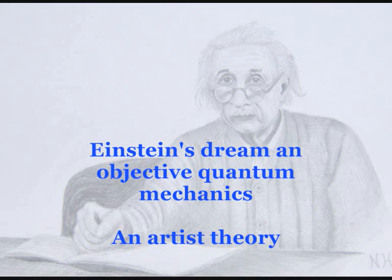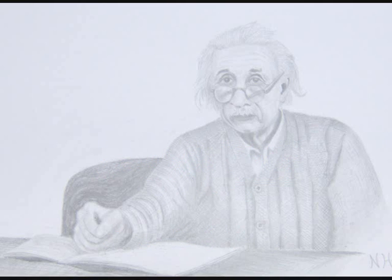Einstein believed that quantum theory was correct but not complete. He believed in a hidden variable that would give quantum mechanics an objective reality that would fit in with the reality of our everyday life.